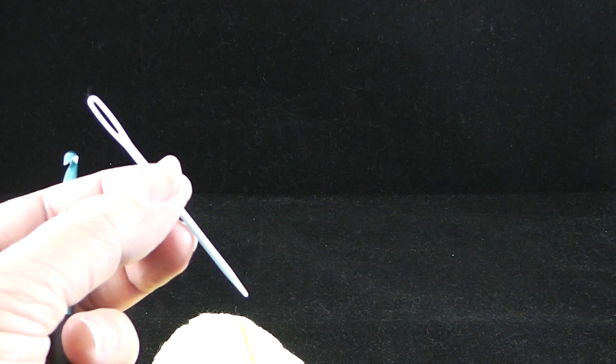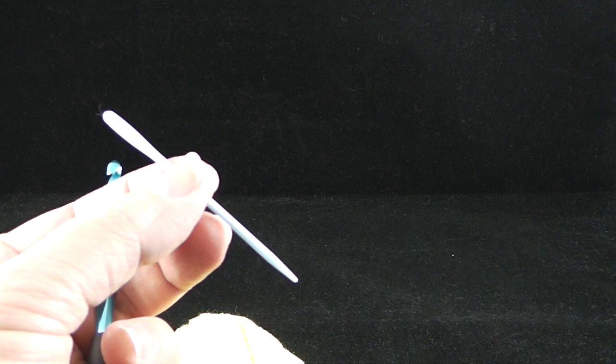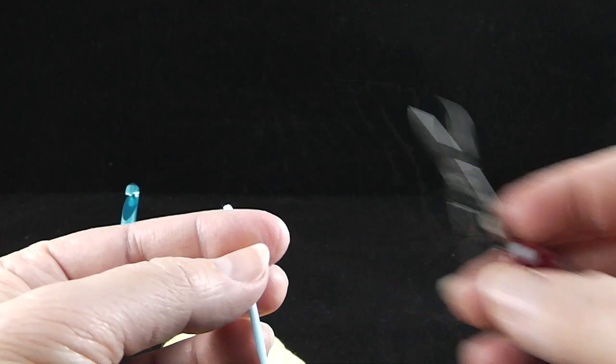And I also recommend that you get a couple of these yarn needles, which are fantastic for hiding loose threads. And I'll show you how to do that at the end of the video. And you're going to need a sharp pair of scissors to cut the strands.